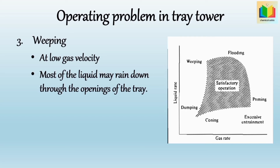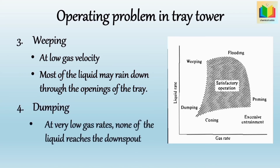The next operating problem is dumping. This occurs at a very low gas velocity and low liquid velocity. Due to very low gas and liquid velocity, none of the liquid reaches the downspout. This condition is called dumping.